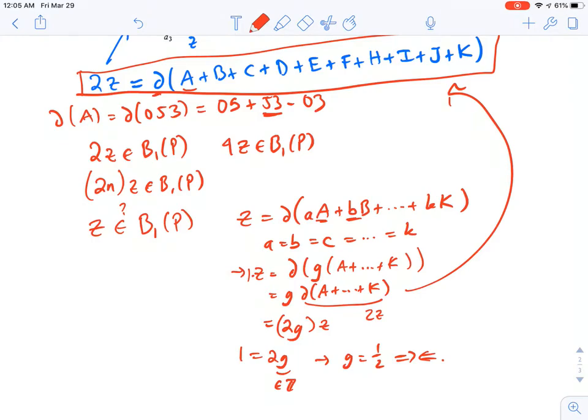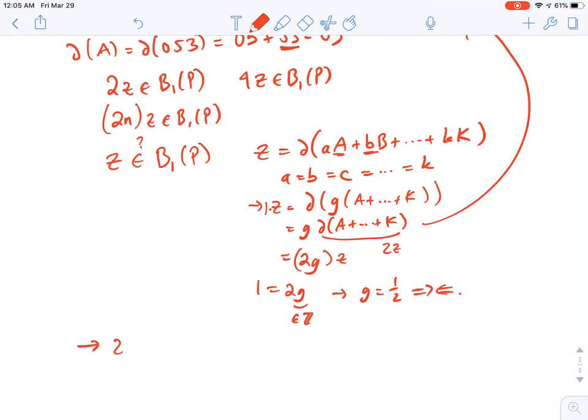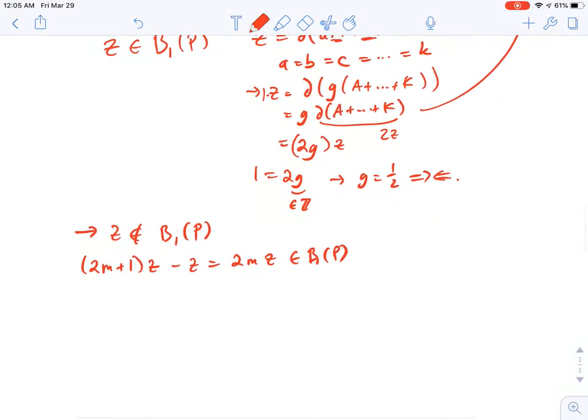Okay, so, in fact, we know that Z cannot be in B1 of P. And, now we're really happy. So, Z is not in B1 of P. But, of course, if you take any odd multiple, so, say you have 2M plus 1Z, and you subtract Z, you'll get 2MZ. That is an even multiple, so that is in B1 of P. So, we conclude that there are actually just two homology classes, the odd multiples and the even multiples.